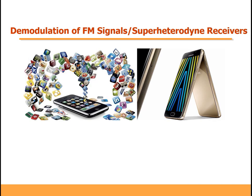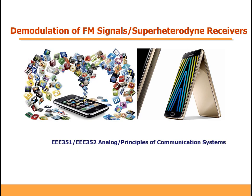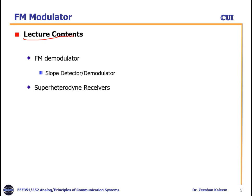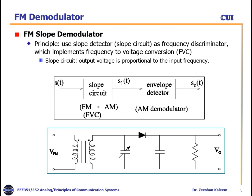Bismillahirrahmanirrahim. Welcome to the online class. Today's topic is demodulation of FM signals and super heterodyne receivers. The course title is Triple 351/352 Analog, or Principles of Communication Systems. I am Dr. Dishaan Kareem from the ECE Department, CUI BAR Campus. We will cover in this video FM demodulators — specifically the slope detector — and the super heterodyne receiver used in AM and FM modulation.